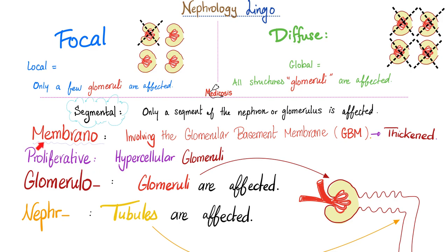How about membranoproliferative? Membrano means it's going to involve the membrane — specifically the glomerular basement membrane, which is between the endothelium and the epithelium of the glomerulus. It's going to be thickened, and then it will split, giving you the tram track appearance.